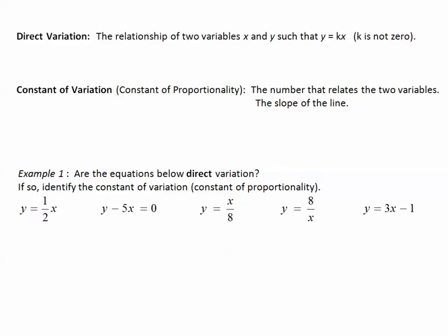Direct variation is the relationship of two variables, such as x and y, such that y equals kx, where k is not zero. What that means is, anything we multiply to one variable will give us the other variable.